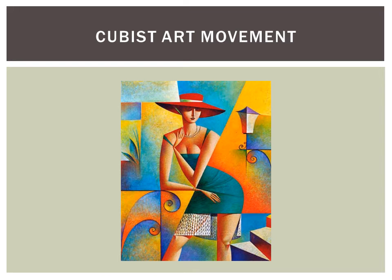In Cubist work up to 1910, the subject of a picture was usually discernible. Although figures and objects were dissected or analyzed into a multitude of small facets, these were then reassembled in a fashion to evoke those same figures or objects.